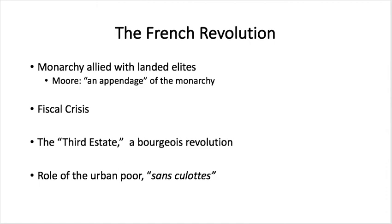In England, primogeniture laws meant all land went to the firstborn male heir, maintaining large landed estates. In France, land was divided among all children, so if you had 50,000 acres and four children, it was divided by four — and then their share divided again, and so on. You don't get large consolidated enclosed lands. Because peasants stayed on the land and retained access to the means of subsistence, you don't get wage labor or the dual market for commodity and labor that you get in England. You get instead feudalism centralized in the national government — national feudalism.